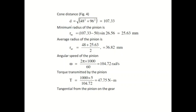Next, we find the cone distance. The formula for cone distance is: DC = √(R² + r²). Wait — the formula is DC = √(R² − r²)... substituting R = 96 and r = 48, the cone distance value is 107.33 mm.